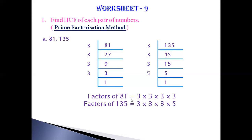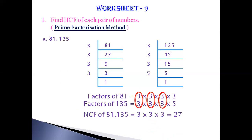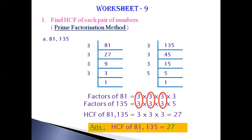Factors of 81 equal to — write all the divisors: 3 × 3 × 3 × 3. Next, factors of 135 — write all the divisors: 3 × 3 × 3 × 5. Now we are going to find the common factors for both numbers. Common factors of 81 and 135: three, then three again, then three again. Therefore, HCF of 81 and 135: three threes are 9, nine threes are 27. So the answer — HCF of 81 and 135 is equal to 27.